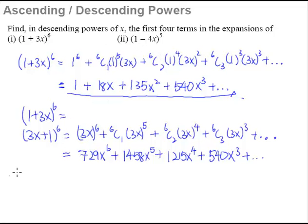So let's take a look at part 2 then. Part 2, we have 1-4x raised to the power of 5. So again, if we were to keep the 4x as the second term, it will have its power increasing. So what we do is of course, you try to make it into the first term.